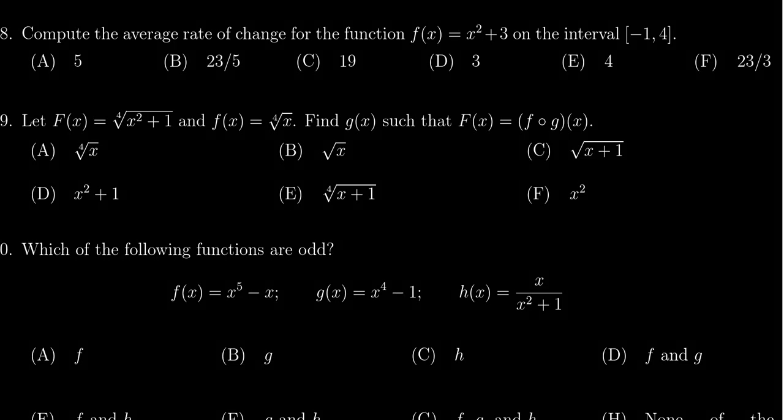In this video, we provide the solution to question number eight for practice exam one for Math 1050. We're given the function f(x) = x² + 3 and we're asked to compute the average rate of change of this function on the interval [-1, 4].